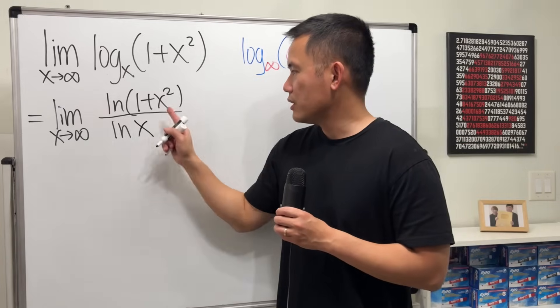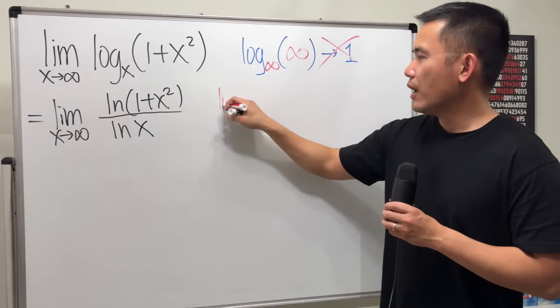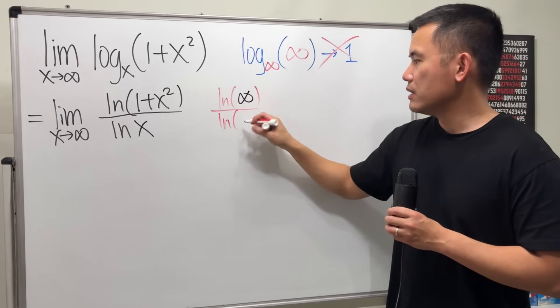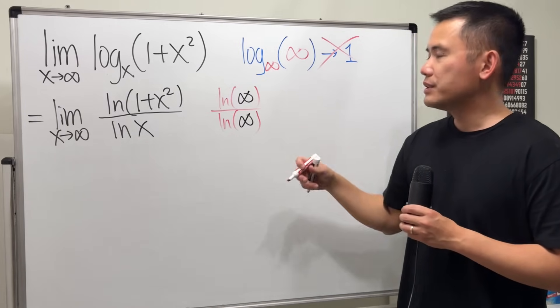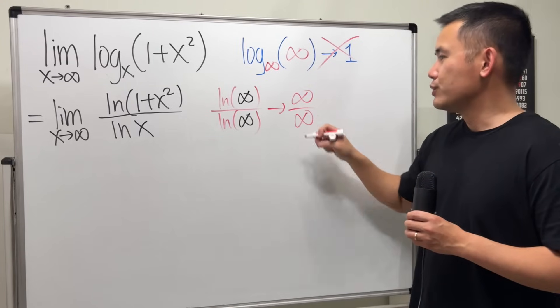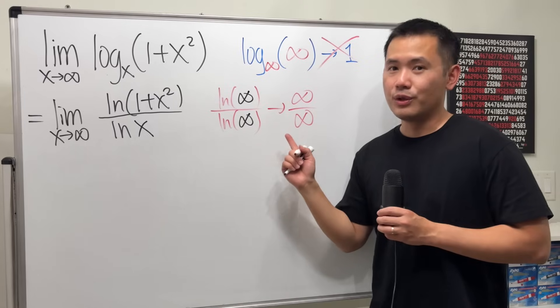Now, if you put infinity into here and here, we are talking about ln of infinity over ln of infinity, which is infinity over infinity, which is indeterminate form, but this one we know much better.